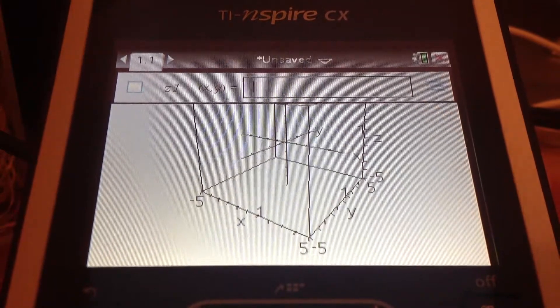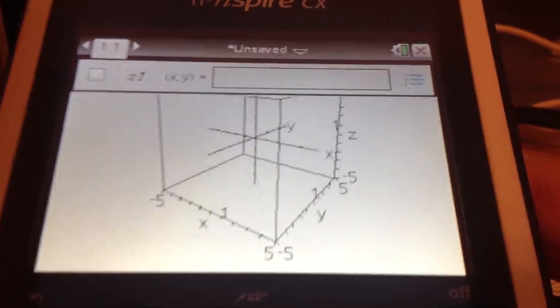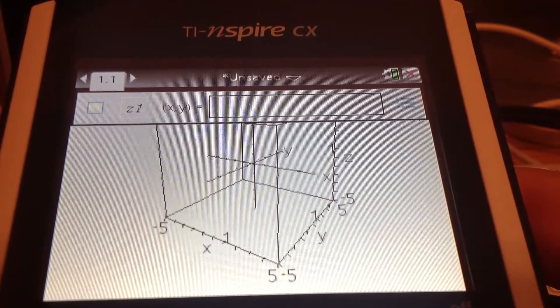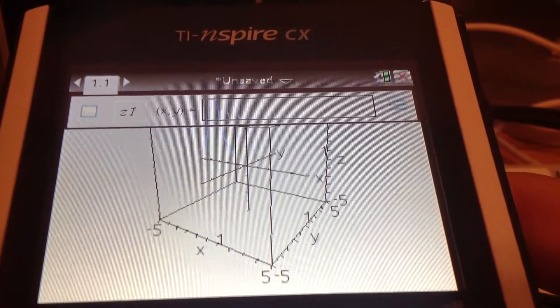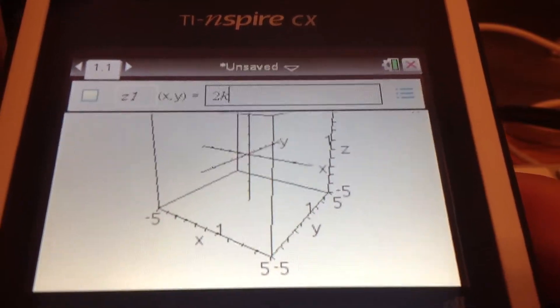Step 4, type in garbage. Type in a garbage equation, no, not even an equation, actually just type in a random number like that. And then hit enter.